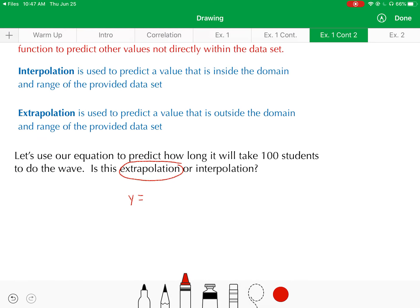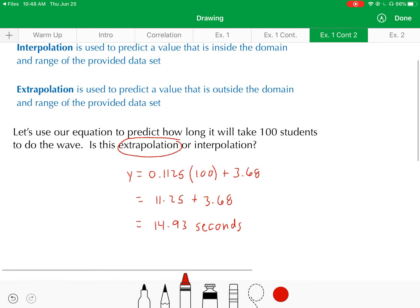Now let's actually do this. We're going to take our equation and we're going to insert 100 for x and then we'll simplify. So this would be 11.25 plus 3.68, which is 14.93, meaning 14.93 seconds for 100 students to do the wave. That's it for this video.